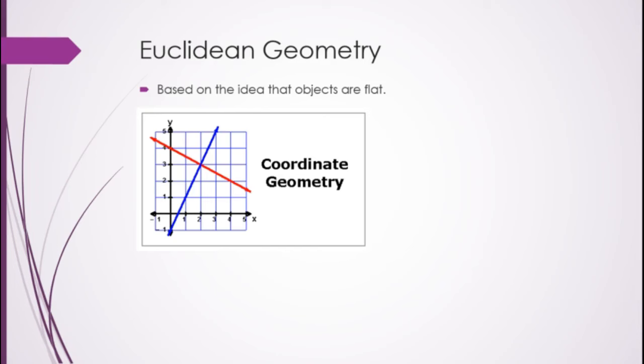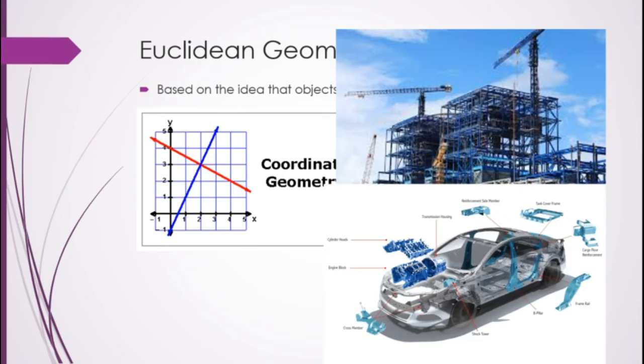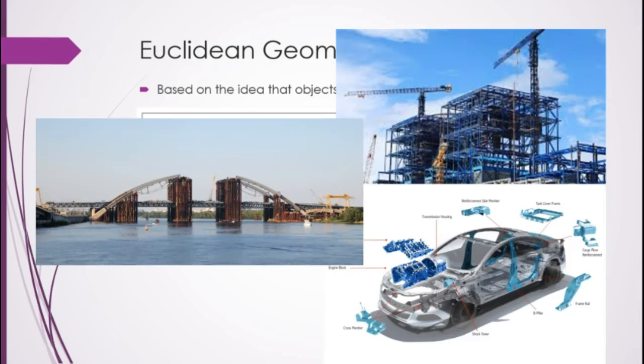This is the geometry that we've been using all year long, and the geometry that you see used for most things we do, because it works well for almost all things that we do in everyday life. Even big projects like building buildings, we're still dealing with things that are flat, building cars, even building larger things like bridges. We still base everything off the fact that we're dealing with flat planes, straight lines.